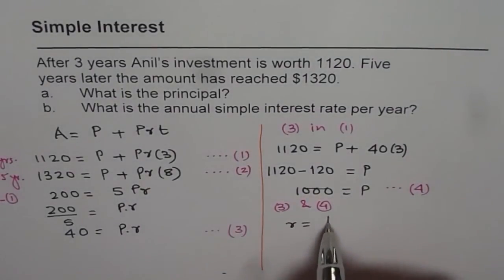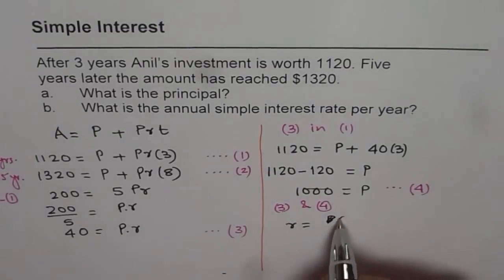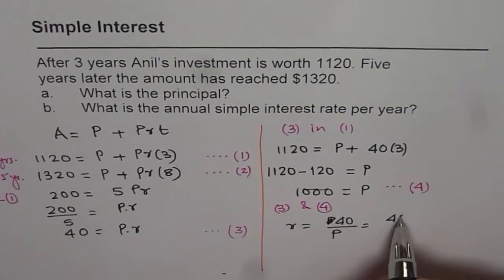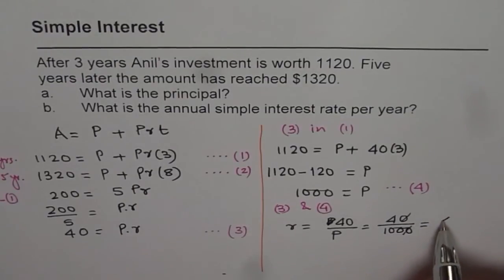R equals 40 divided by P. That is 40 divided by 1000. So 40 divided by 1000, so 4 percent. Do you see that? So we get our answer as 4 percent. 4 out of 100.